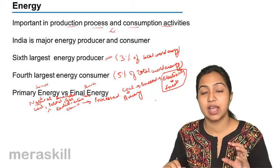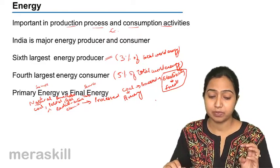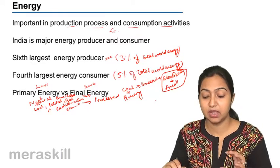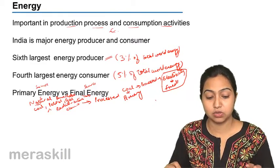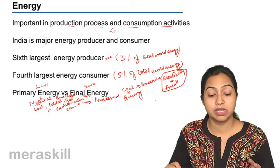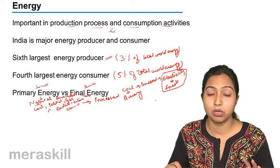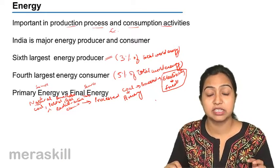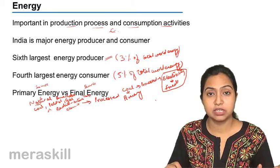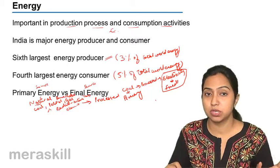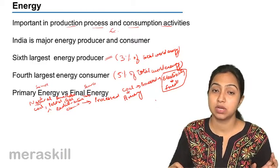So coal, natural gas, oil and petrol, and radioactive elements—they are primary and final source as well. Whereas electricity is the only source of energy that is only final source of energy. So from this, we know that energy is an important thing that is needed for economic development. India is a major energy producer and consumer, sixth largest when it comes to production and fourth largest when it comes to consumption.